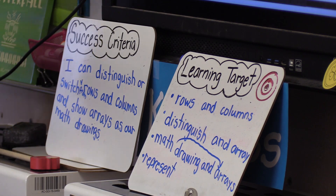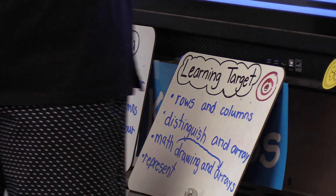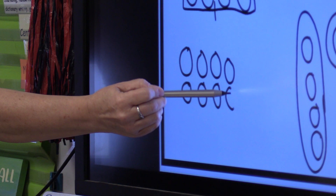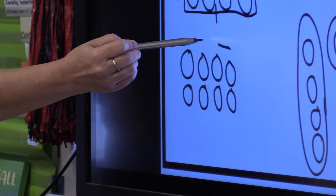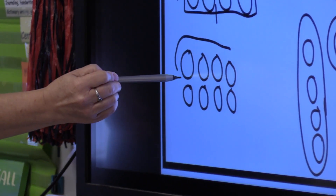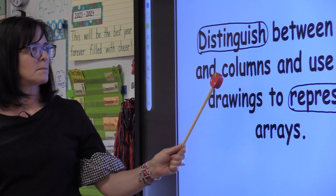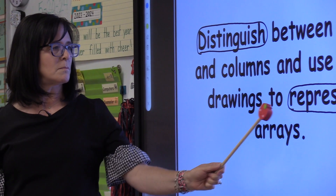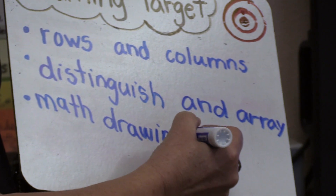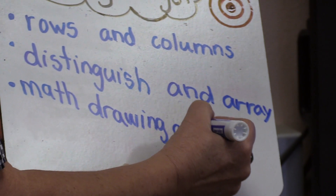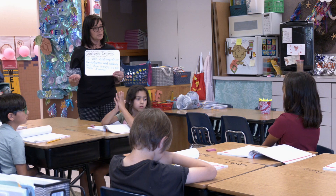The success criteria and the learning target are geared toward any student, as long as the teacher can dissect it, pick it apart, draw a picture. I drew the shape of an array, a square, a rectangle — having visuals for visual learners and words for reading learners. Our learning target said today that we needed to do a math drawing, and your math drawing was your array.